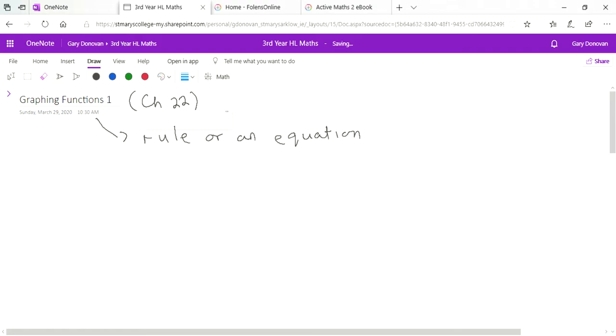In every function what we have is an input value that we can put into the function, and then we get an output. The function is the rule or equation that we put the input value into. There are different ways you can write functions, but the simplest way would be y equals 3x plus 7.